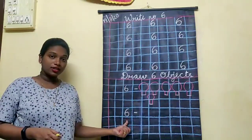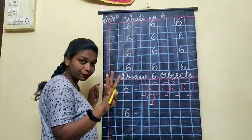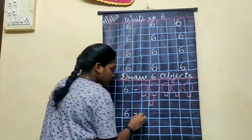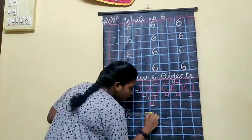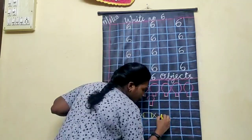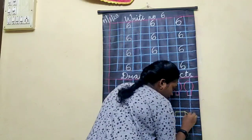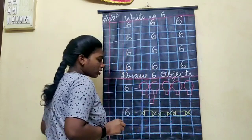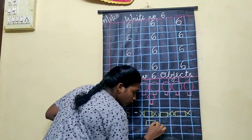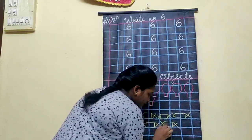So next, the same number six. Now I'm going to draw chocolates. How many chocolates do we have to draw? Six. You're going to put a rectangle shape, then put a round cross — that's a chocolate. One chocolate, two chocolate, three chocolate, four chocolate, five chocolate, six chocolate.